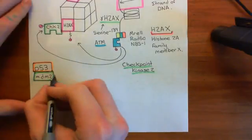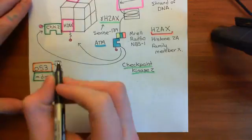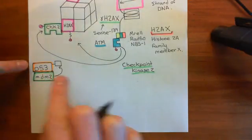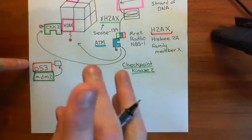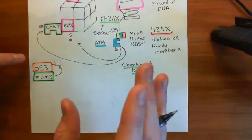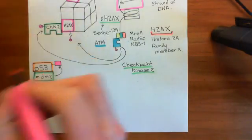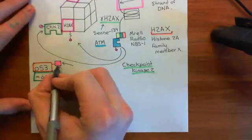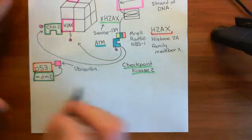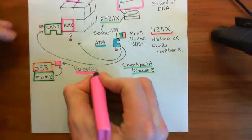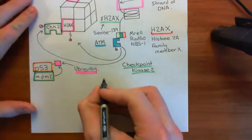MDM2 is actually an enzyme and is going to catalyse the addition of ubiquitin groups onto P53. Just the mere binding of MDM2 to P53 stops it from being able to do anything. But to add insult to injury, the MDM2 is then going to stick ubiquitin groups onto the P53. Ubiquitin is far more deadly than a phosphate group — proteins do not want to have ubiquitin groups added onto them, because ubiquitin is the marker that says 'destroy me' to the proteasome.